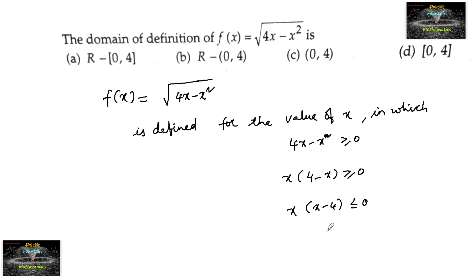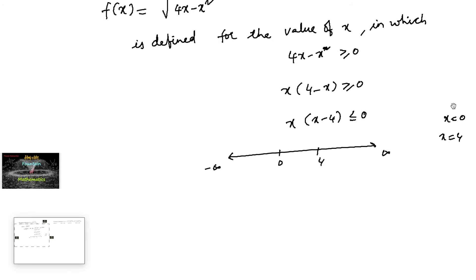We find two points: x = 0 and x = 4. These divide the number line into three parts: minus infinity to 0, 0 to 4, and 4 to infinity.